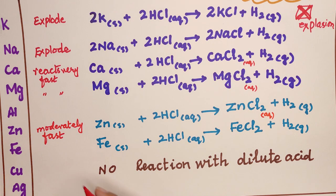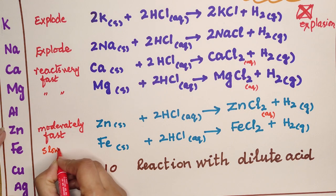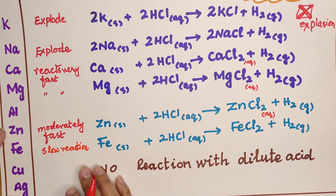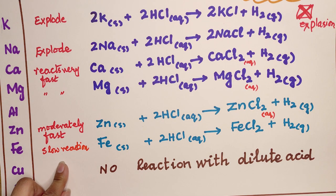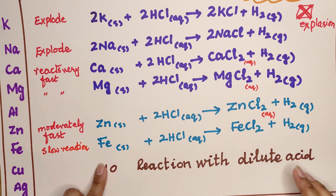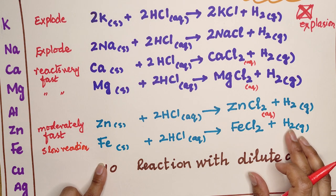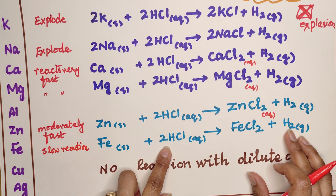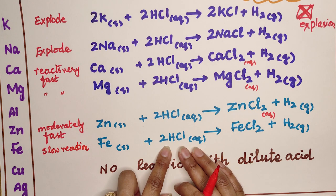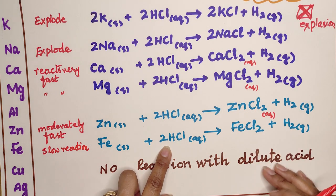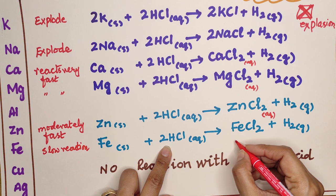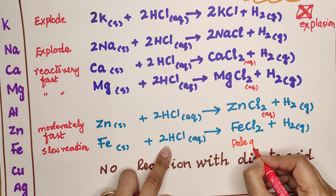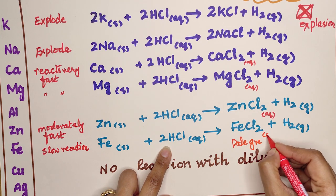Iron gives a very slow reaction with hydrochloric acid, producing bubbles of hydrogen gas as iron dissolves in the acid. The color of the iron(II) chloride solution obtained is pale green — this is the characteristic pale green color of FeCl₂.